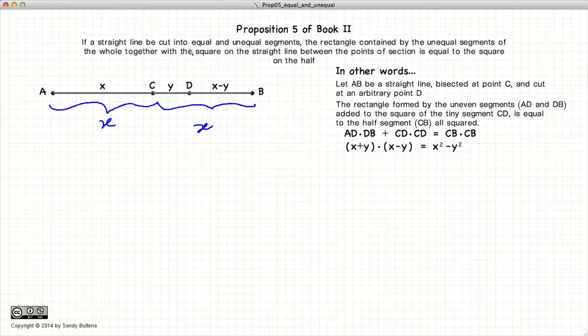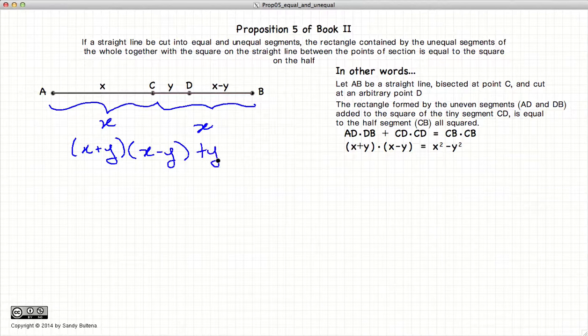Now if CB is X and we label CD Y, then DB would be X minus Y. And this proposition states that AD, in other words X plus Y, multiplied by DB, which is X minus Y, plus the square on CD, plus Y squared, will be equal to CB squared, or X squared, which is this formula here, which you may remember from high school algebra.